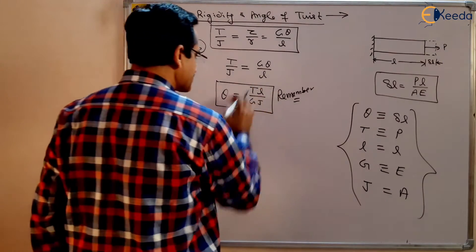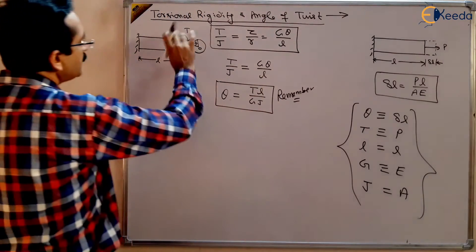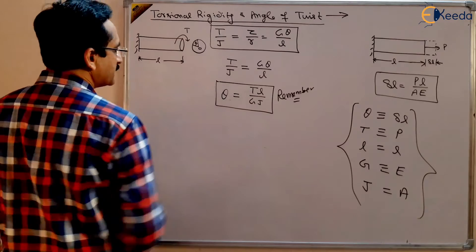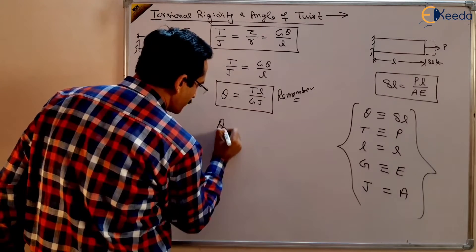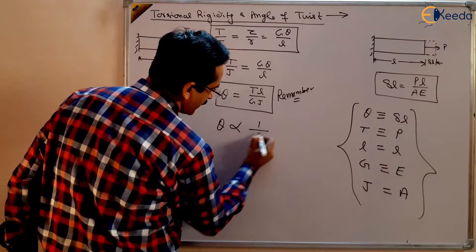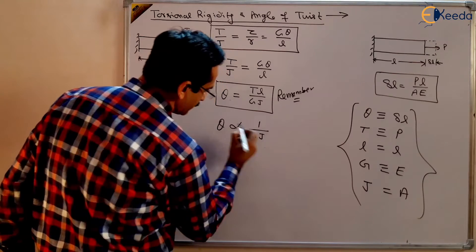Now in this case, for a given torque and for a given length, theta is proportional to one by GJ, this term GJ.